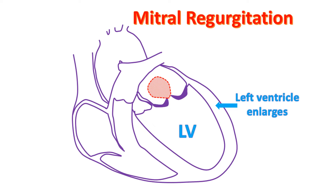The forceful contraction of the left ventricle is felt by the person as palpitation. In the long run, the left ventricle starts failing due to the overload in case of severe mitral regurgitation.